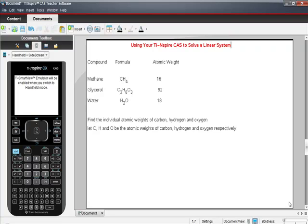Our task today, and this is going to be quick and actually really easy, is to find the atomic weights of carbon, hydrogen, and oxygen, the individual atomic weights. So we're going to let C, H, and O be the atomic weights of carbon, hydrogen, and oxygen, respectively.